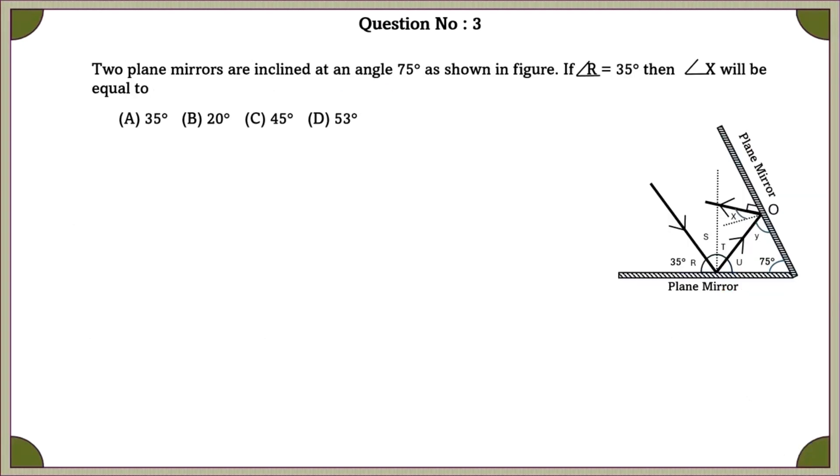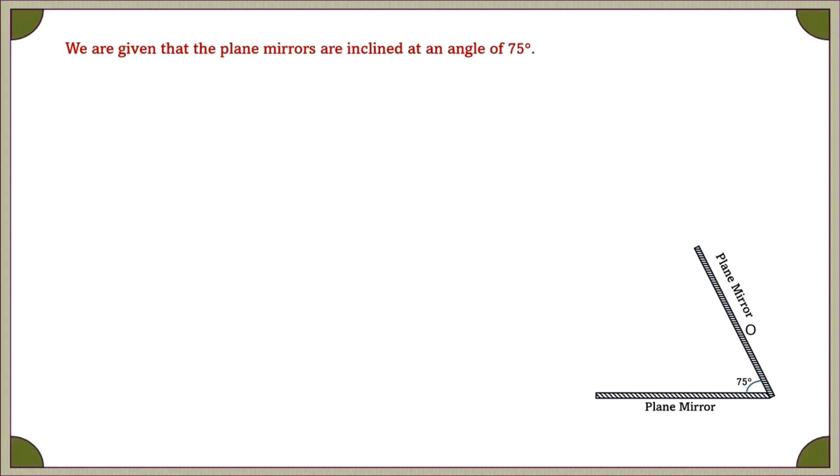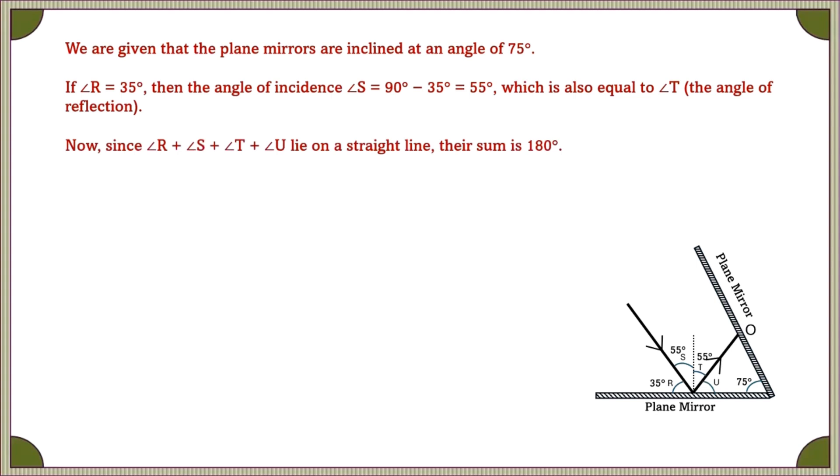Question number 3, two plane mirrors are inclined at an angle of 75 degrees as shown in the given figure. If angle R is equal to 35 degrees, then angle X will be equal to? We are given that the plane mirrors are inclined at an angle of 75 degrees. If angle R is equal to 35 degrees, then the angle of incidence, that is angle S, is equal to 55 degrees, which is also equal to angle T, the angle of reflection. Now, since angle R plus angle S plus angle T plus angle U lie on a straight line, their sum is 180 degrees.